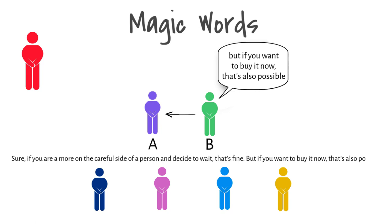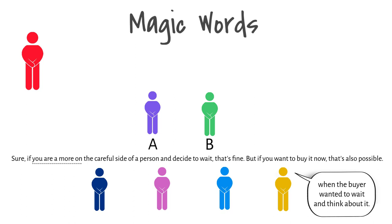You said 'you're a moron' when the buyer wanted to wait and think about it. It was embedded in between the words 'sure if' and 'the careful side of a person.' And then you said 'you want to buy it now.' It was embedded in between the words 'but if' and 'that's also possible.'